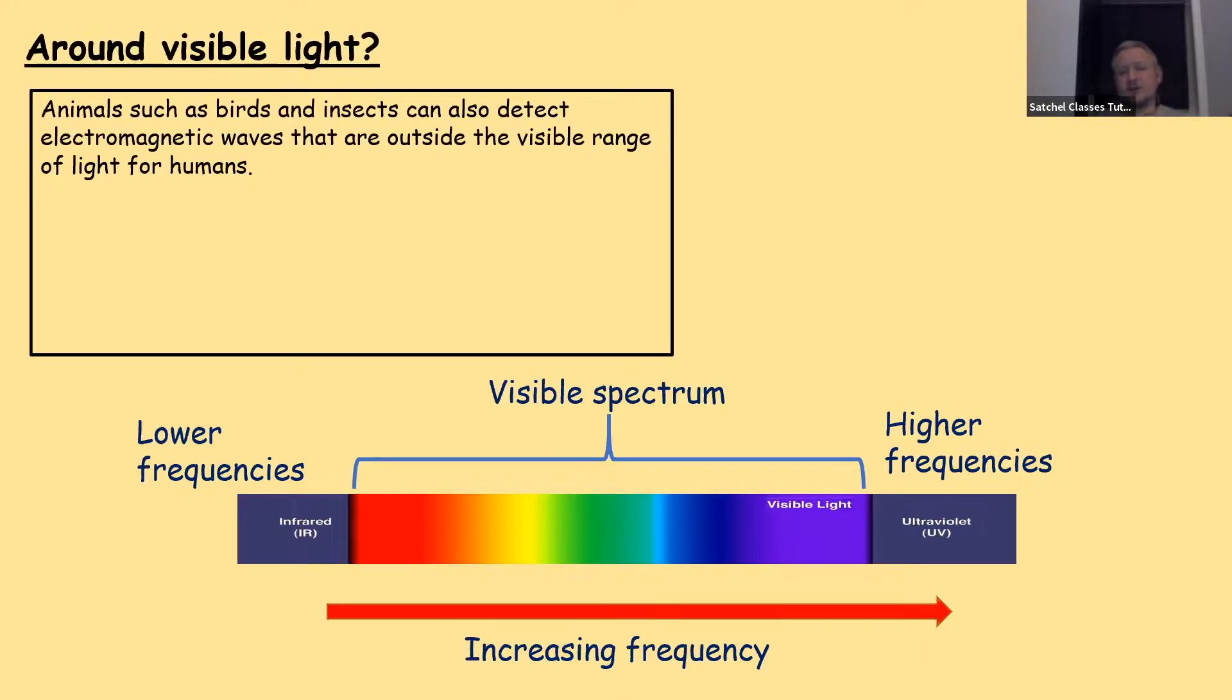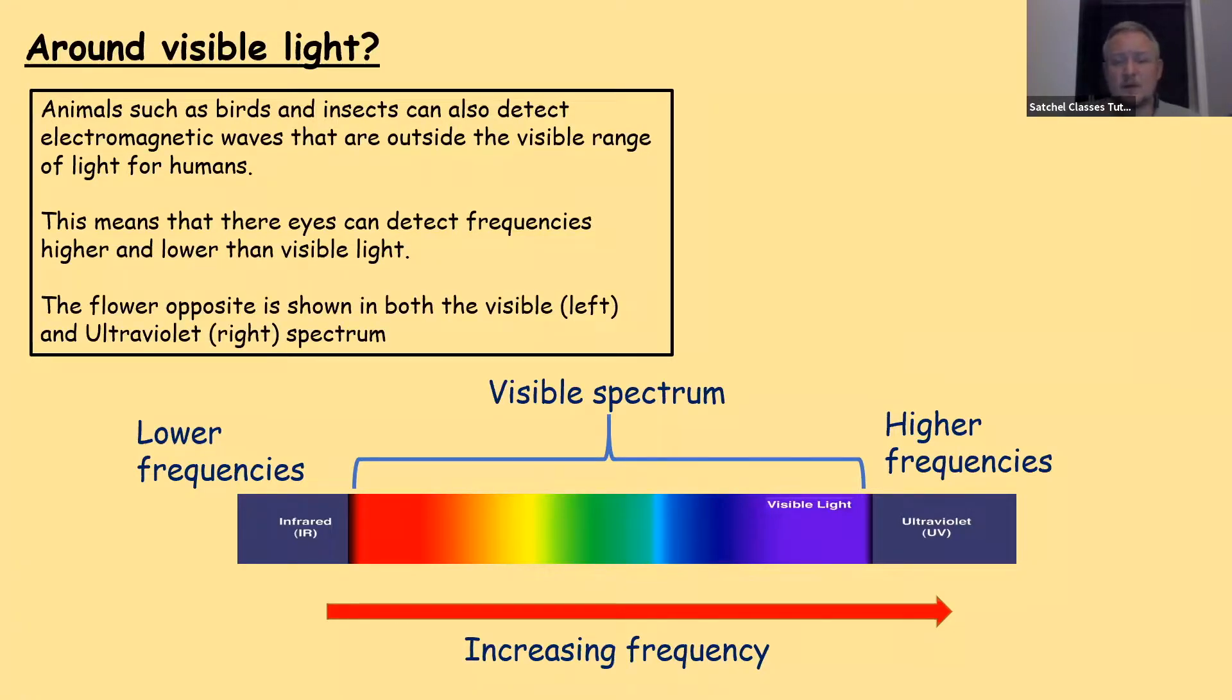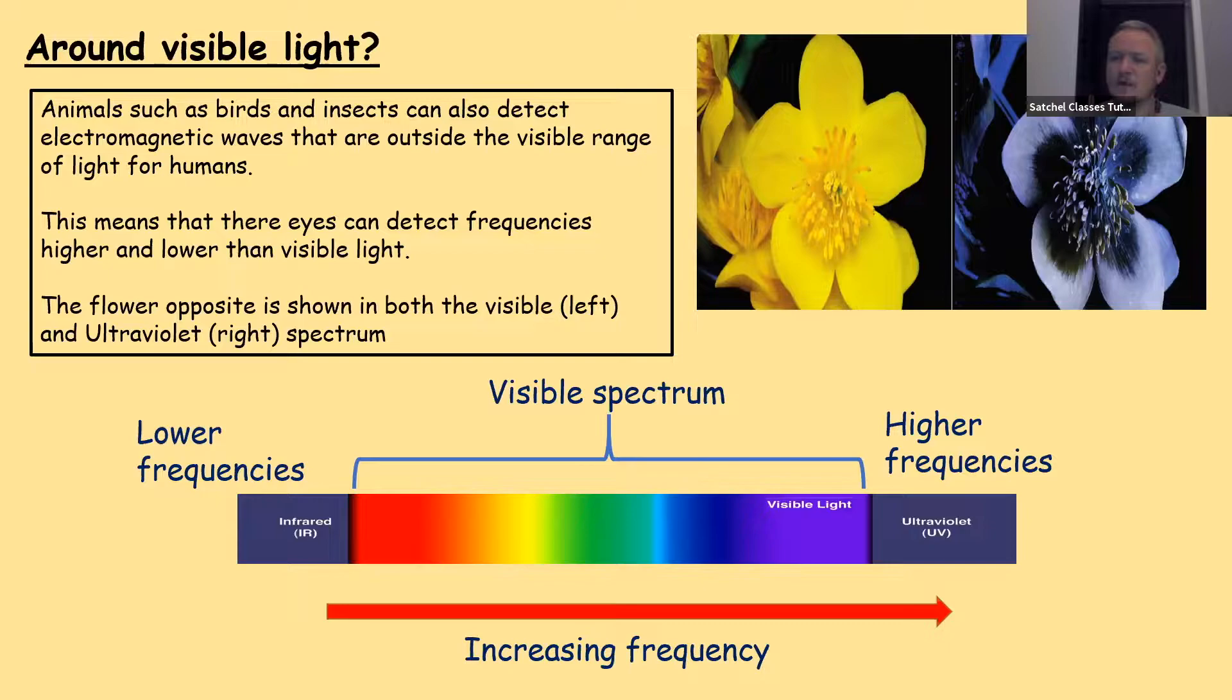Around visible light then. Animals such as birds and insects can detect electromagnetic waves that are outside our visible range, things that we can't see. This means that their eyes can detect frequencies that are higher and lower than visible light for ourselves. The flower opposite is a marsh marigold that's shown in both the visible spectrum, what we can see, and in the ultraviolet spectrum, what pollinating insects like a honeybee can see. There's a massive difference in what we can see in terms of the detail. The ultraviolet reflection highlights the filament and anthers to indicate to pollinating insects that that area contains nectar.